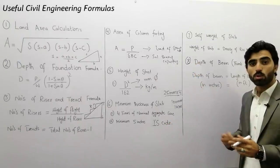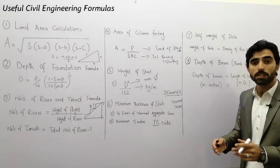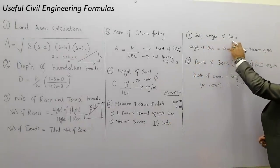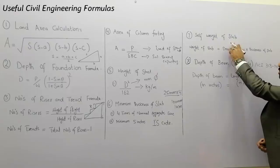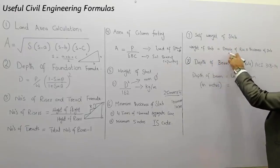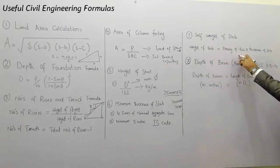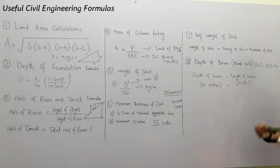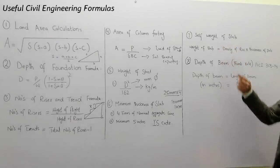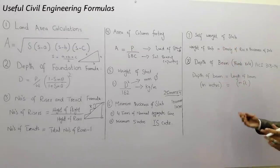The seventh formula is about the self weight of a slab. The weight of slab is equal to the density of RCC multiplied by the thickness of the slab, which gives us the self weight of the RCC slab.